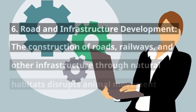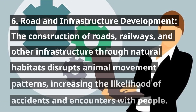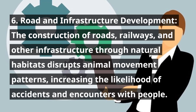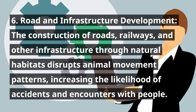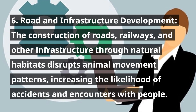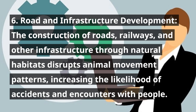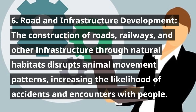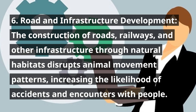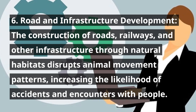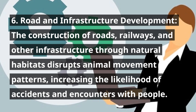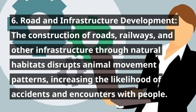6. Road and infrastructure development. The construction of roads, railways, and other infrastructure through natural habitats disrupts animal movement patterns, increasing the likelihood of accidents and encounters with people.